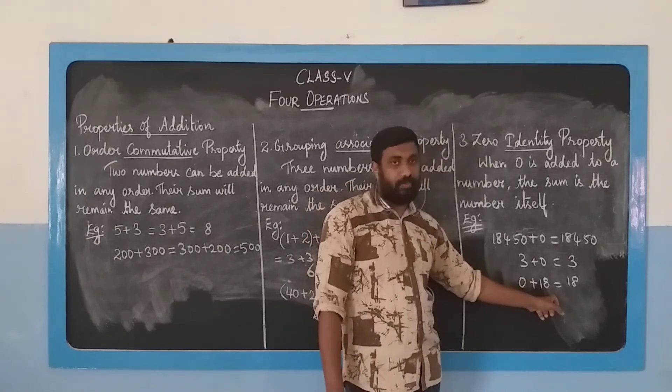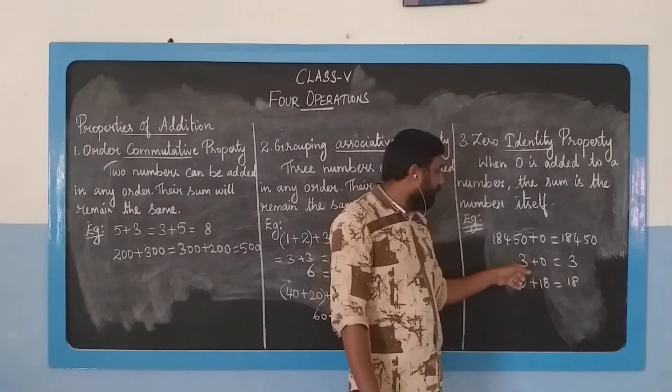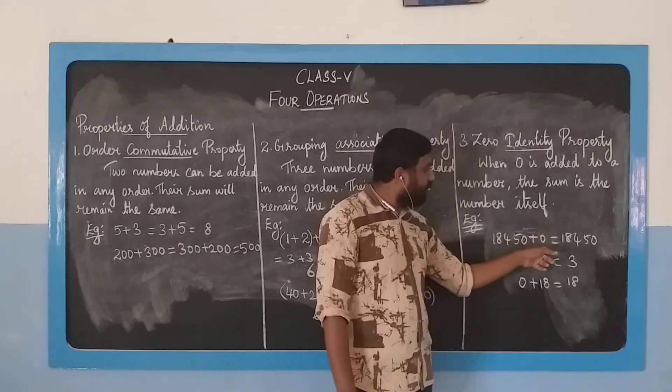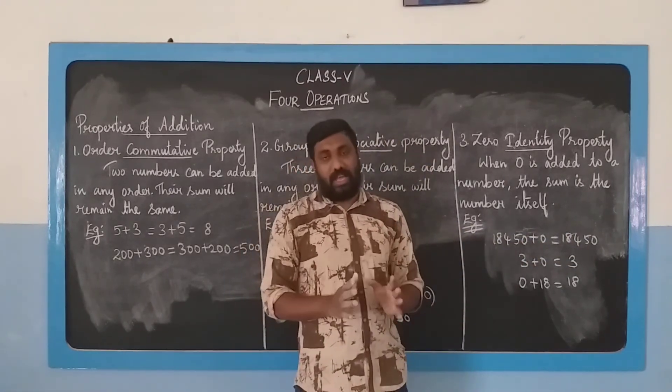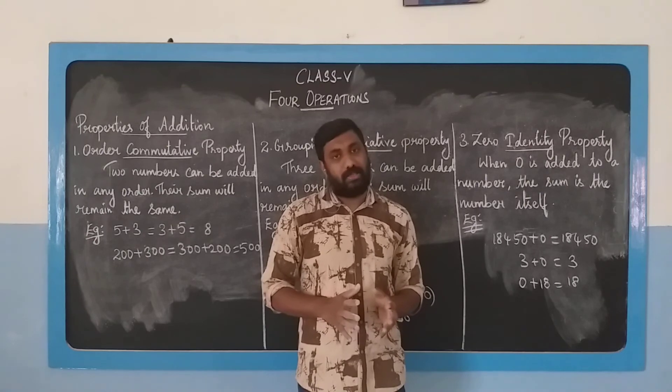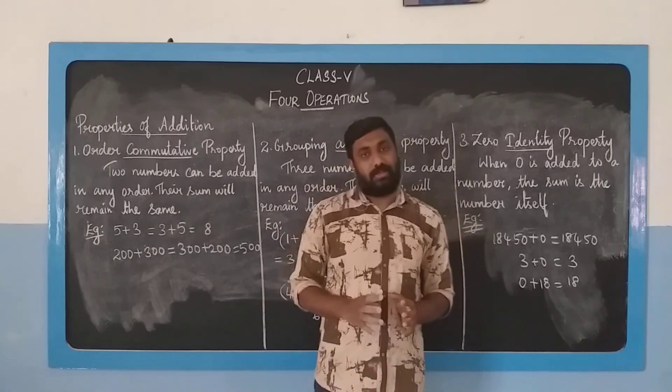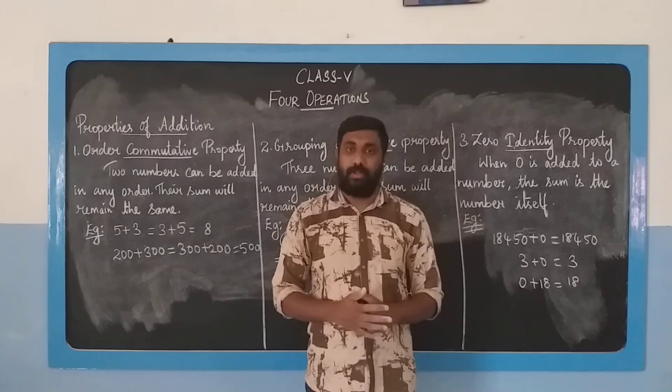For example, 0 plus 18. If I add 0 to 18, what will be the answer? The number itself, 18. 3 plus 0 equals 3. 18,440 plus 0 equals 18,440. Whichever number it might be, if I add 0, the answer is the number itself. These are the three basic properties of addition which we will use in our upcoming classes.